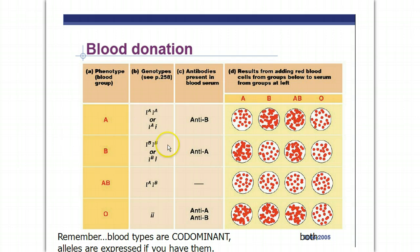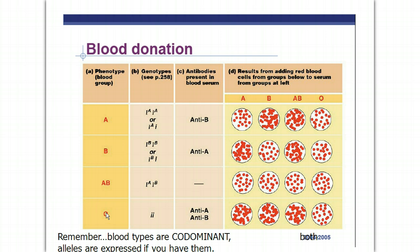If you have type B blood, you have either big B, big B, or big B blank. If you have type AB blood, you have only one genotype: big A, big B. The I's just mean it's a blood type. And if you have type O blood, you're just blank blank. As far as antibodies producing your serum and who you can give blood to, we're going to talk about that fourth quarter when we talk about the immune system.